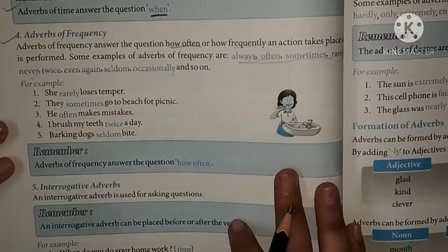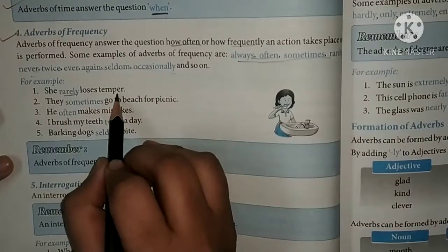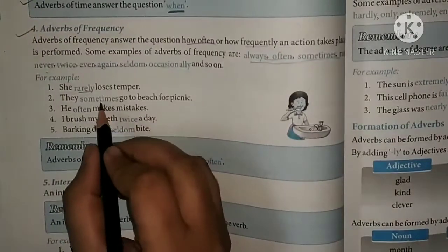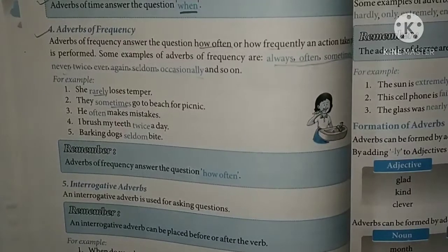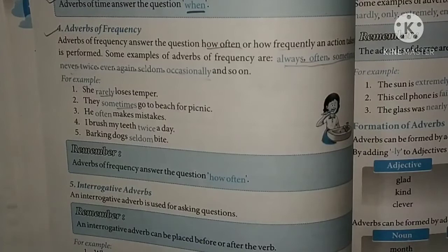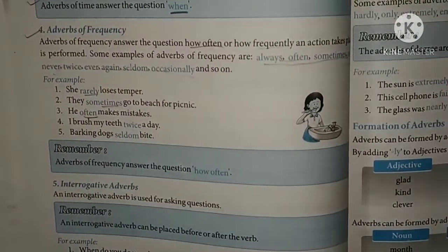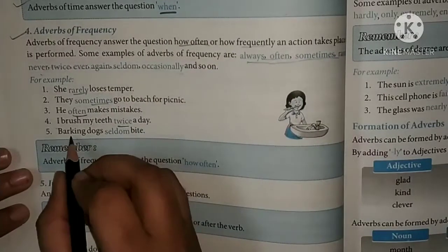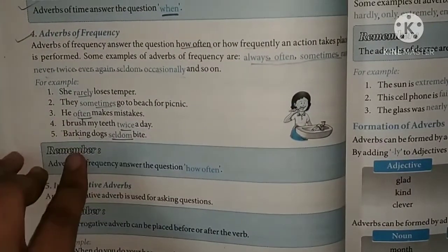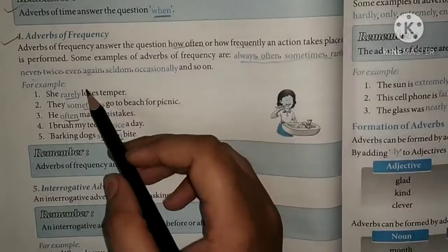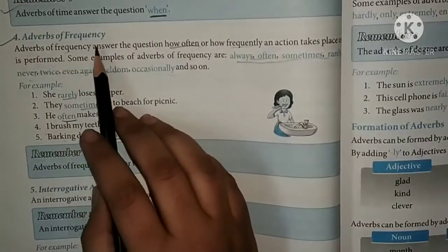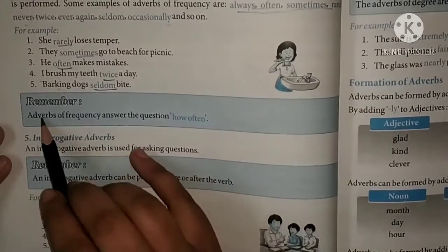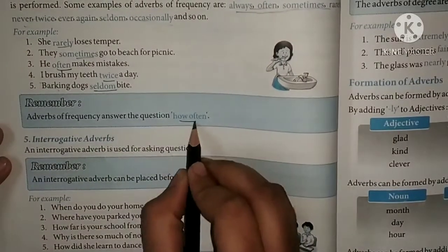Examples of adverbs of frequency: 'She rarely loses her temper' — rarely means occasionally, sometimes. 'They sometimes go to the beach for a picnic.' 'He often makes mistakes' — meaning he makes mistakes regularly. 'I brush my teeth twice a day.' 'Barking dogs seldom bite.' Adverb of frequency answers the question 'how often'.